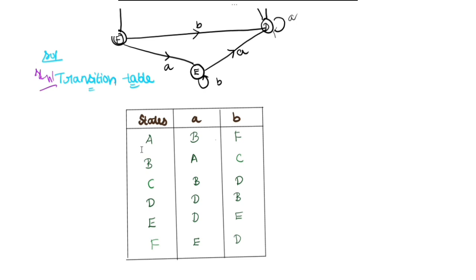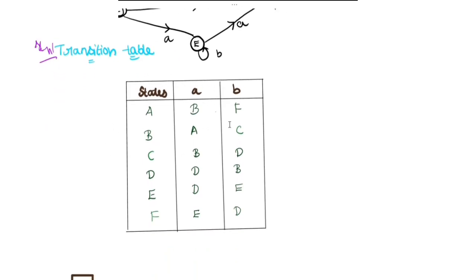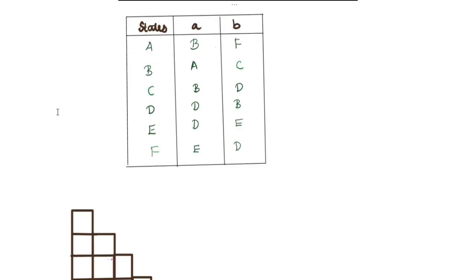The first step involves inputs A and B. The second step is F. So we will fill the Transition Table with inputs A and B. The next step is the Table Filling Method.